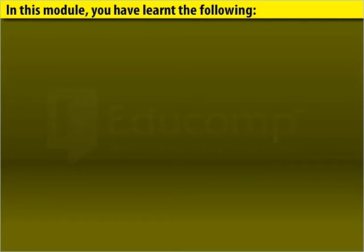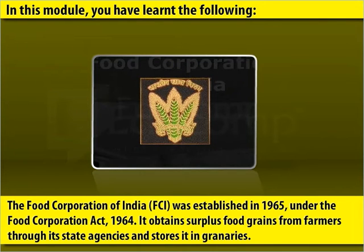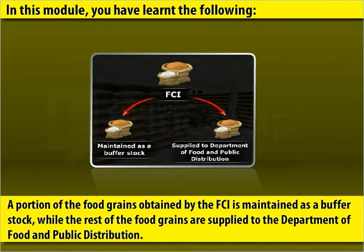In this module, you've learned the following. The Food Corporation of India, FCI, was established in 1965 under the Food Corporation Act, 1964. It obtains surplus food grains from farmers through its state agencies and stores it in granaries. A portion of the food grains is maintained as a buffer stock, while the rest is supplied to the Department of Food and Public Distribution.